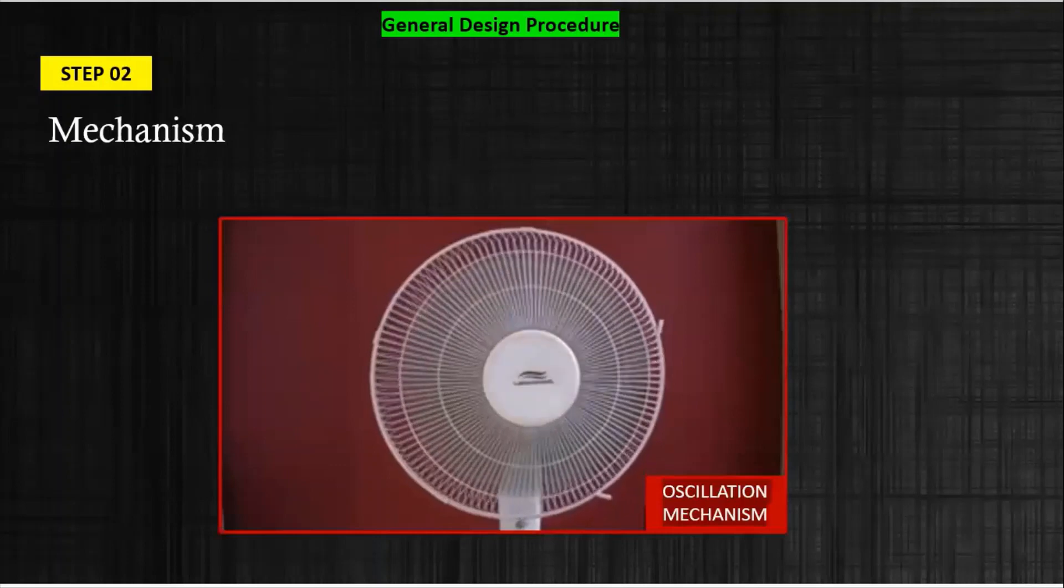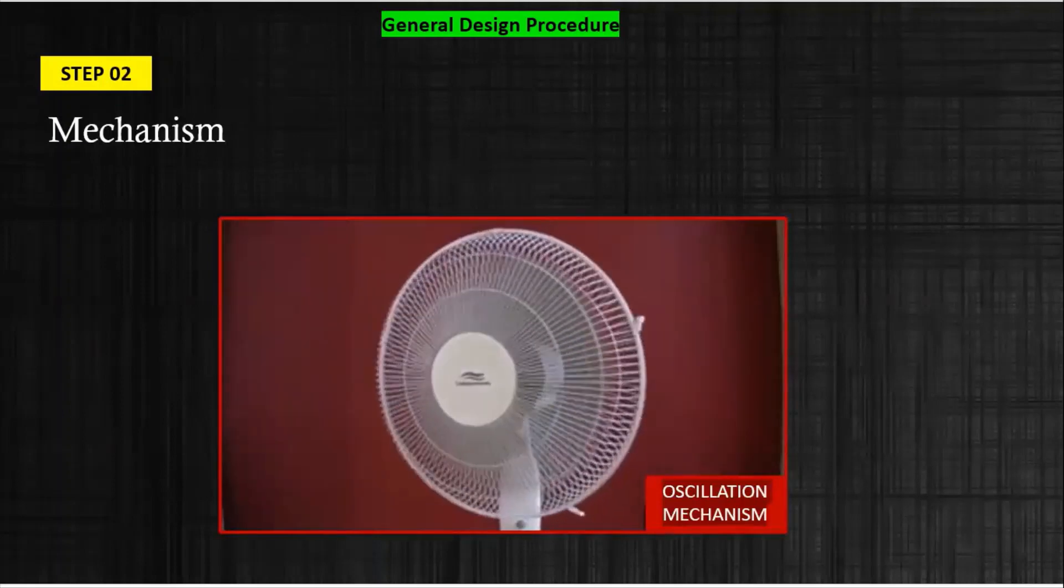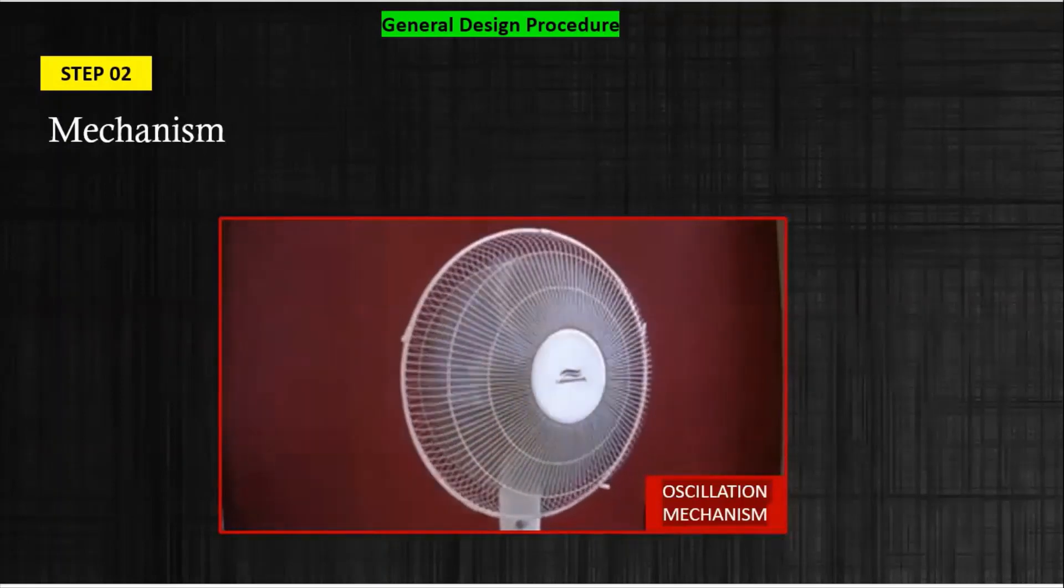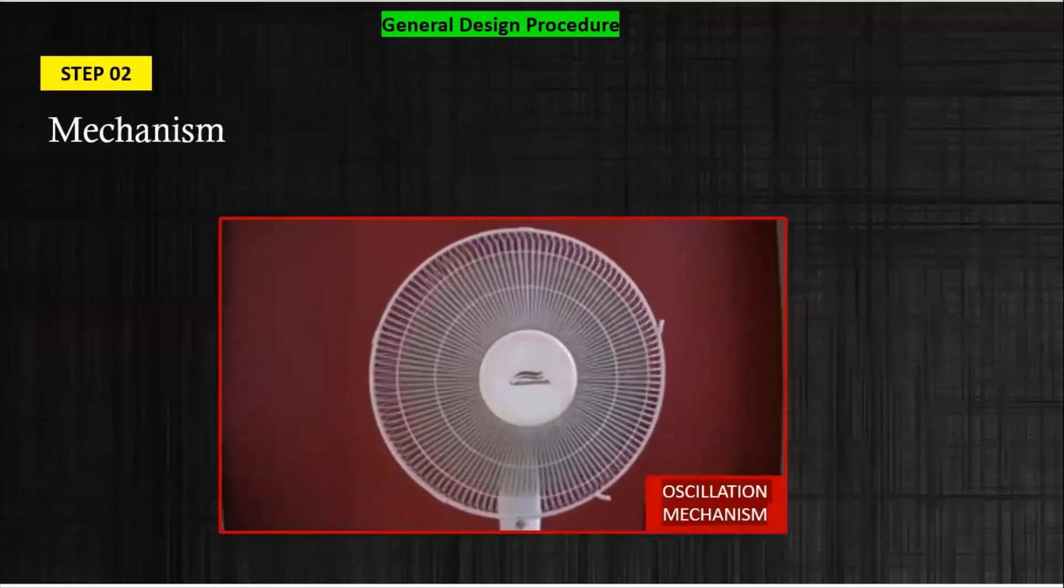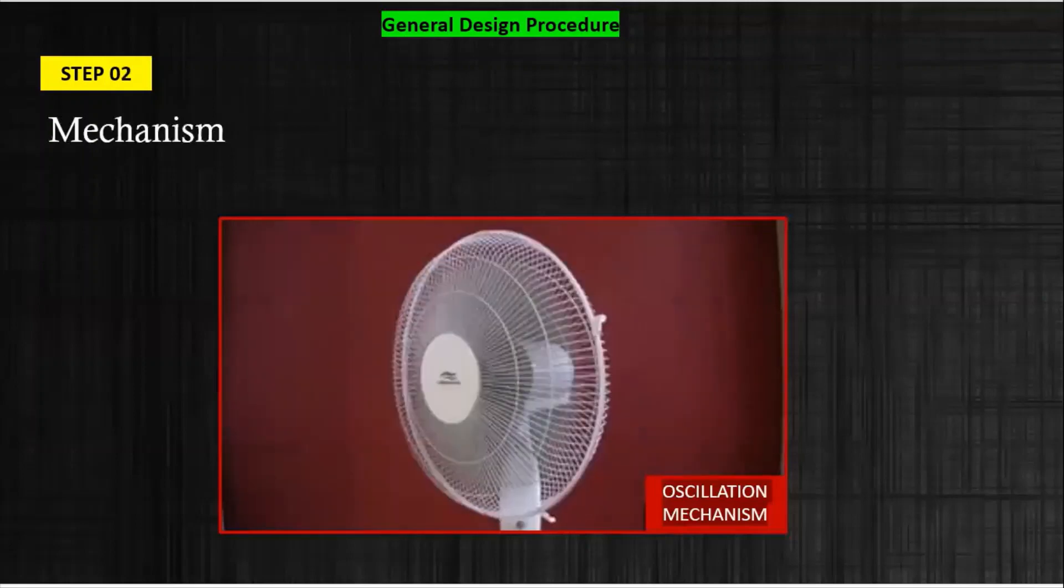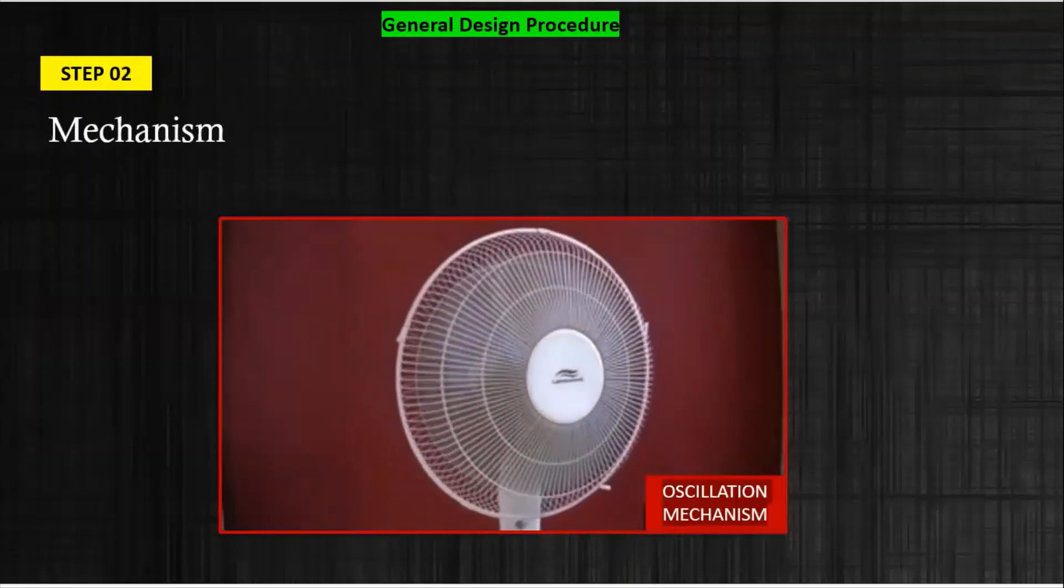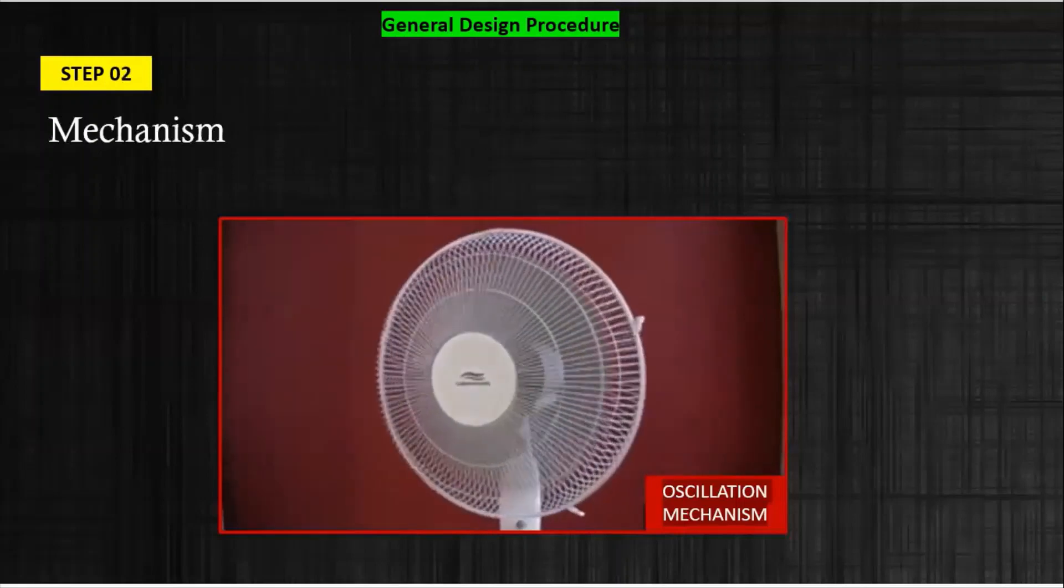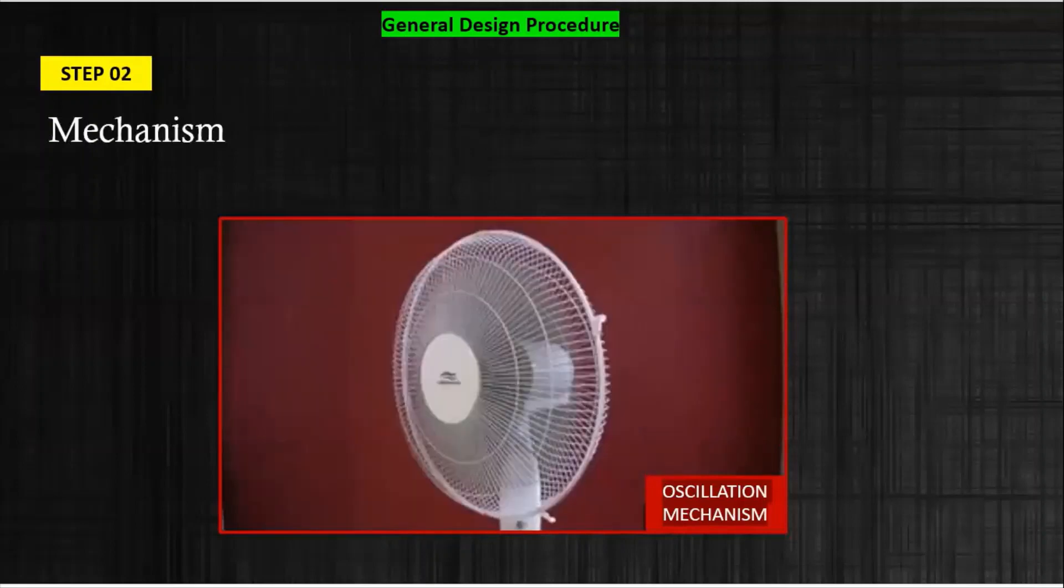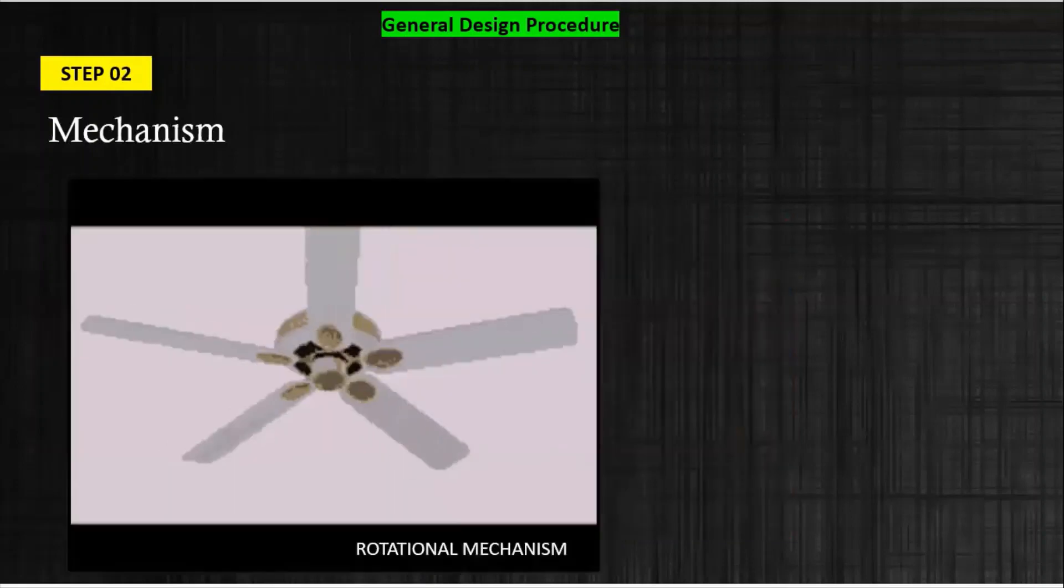After this, what is the next step? Mechanism. Now in the ceiling fan there are different mechanisms you can use. This is a table fan actually, and in the table fan we know there is an oscillation mechanism which gives the desired motion, approximately 180 degrees rotation. Now we have the ceiling fan decided here, so in the ceiling fan there is a rotational mechanism which will give the angular motion, around 360 degree rotation.